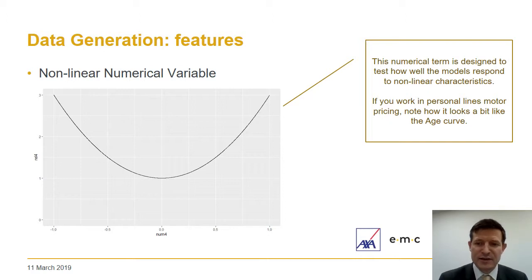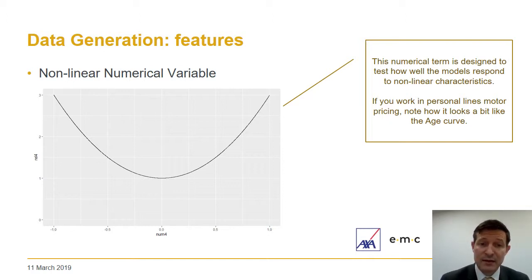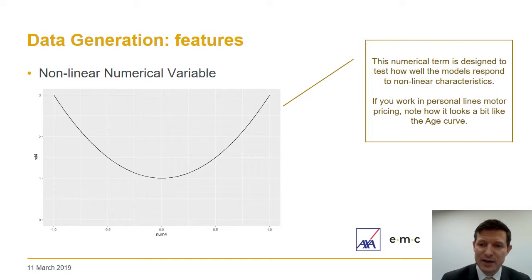In addition to the interaction term, we've introduced a non-linear term into our data. Real life data is full of non-linear effects and they can be quite difficult for models to pick up. We've designed this non-linear term to look like the age curve in personal lines motor pricing, where young drivers see a material load over the average and older drivers do as well. We'll see how well our models fit to this feature later.